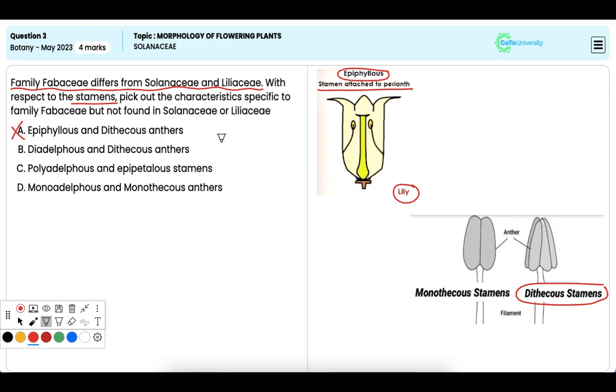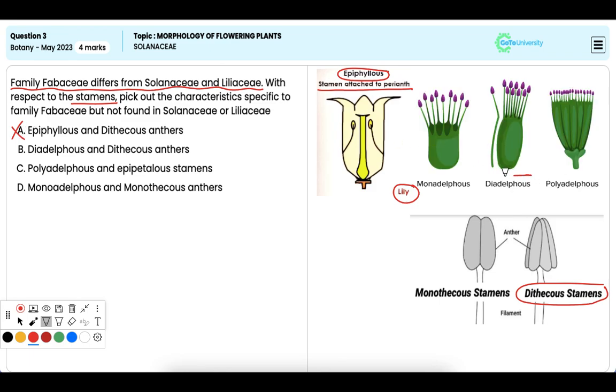Option B: Diadelphous and Dithecous anthers. Now Diadelphous condition, where the stamens are united in two groups, and Dithecous anthers, where each stamen has two lobes, are characteristic features of the family Fabaceae.